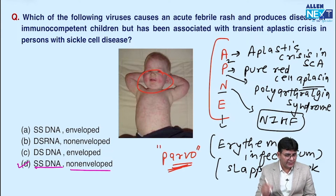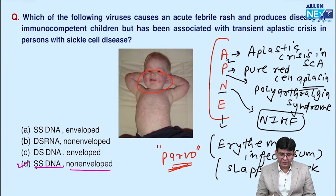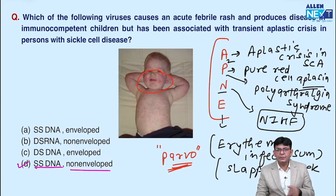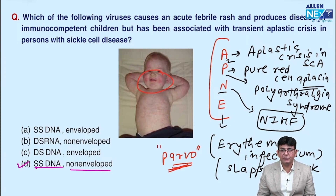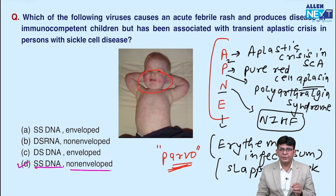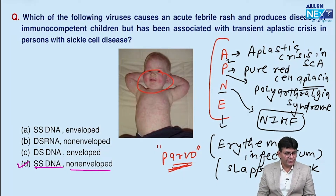All of these points are being asked in exams nowadays. Pure red cell aplasia was actually asked in the same exam twice, strongly associated with Parvovirus B19. So remember: Parvovirus B19 is a single-stranded DNA, non-enveloped virus, and it causes all the conditions described in the APNE mnemonic.